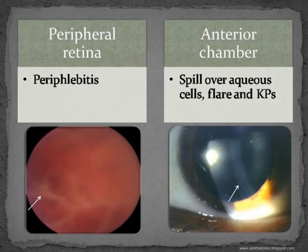With so much exudation and inflammation occurring in the ciliary body region and behind the lens, there could be spillover of these cells into the anterior chamber. Initial examination of the anterior segment may reveal aqueous cell, flare, and keratic precipitates. But further dilation and examination of this intermediate zone will give the diagnosis of intermediate uveitis. Spillover of cells into the anterior chamber occurs not only in intermediate uveitis but also in posterior uveitis.